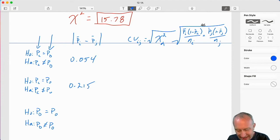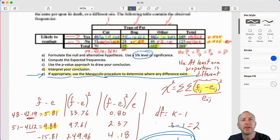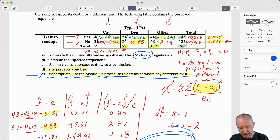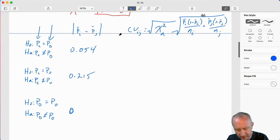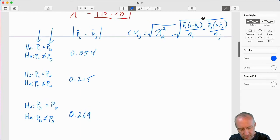And then, the next, I'm looking at dogs and other. For dogs and other, now, again, I'm coming back here. 0.662 minus 0.393. And that gives me a value of 0.269.